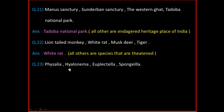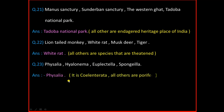Question Number 23: Phycelia, Hyalonema, Euplectella, Spongilla. And the answer is Phycelia. It belongs to Coelenterata and all others are Porifera.